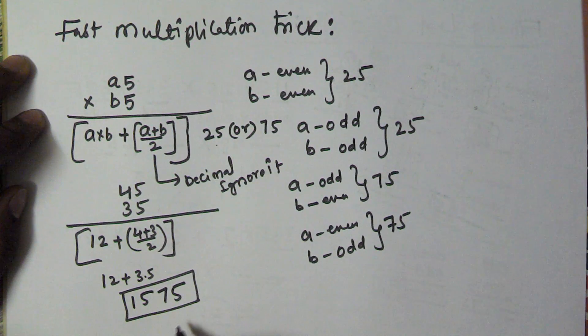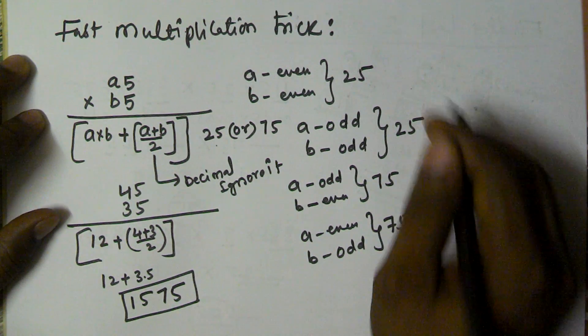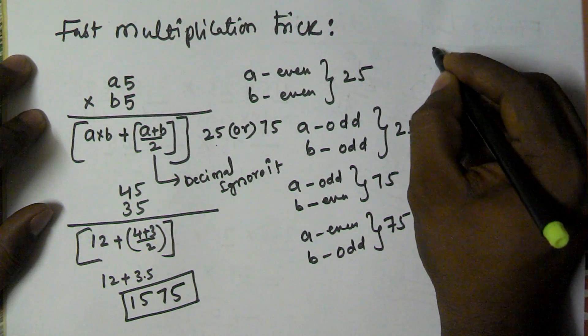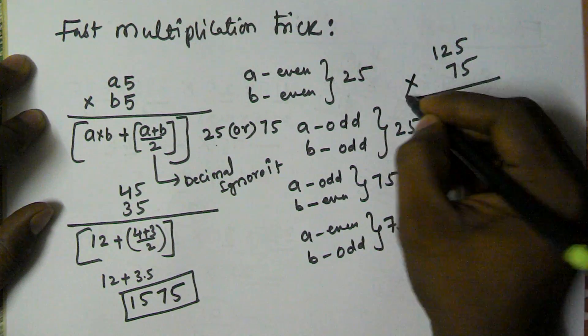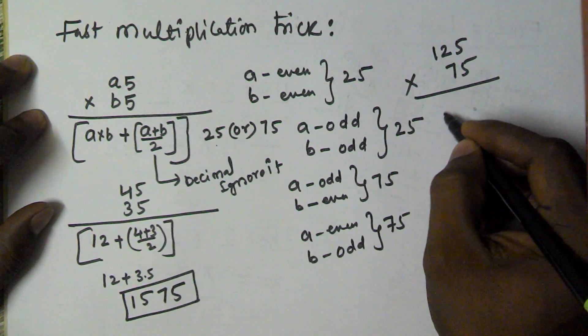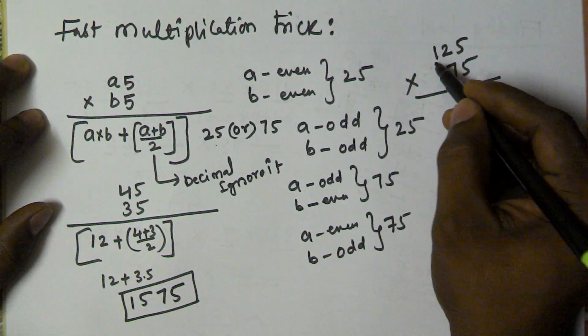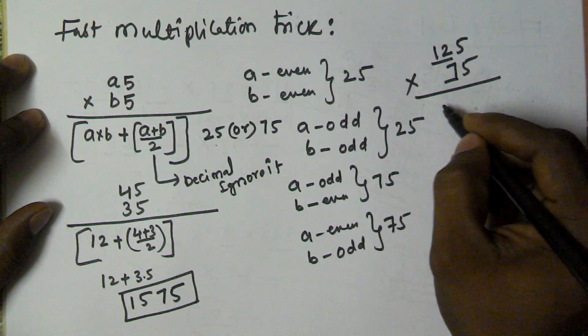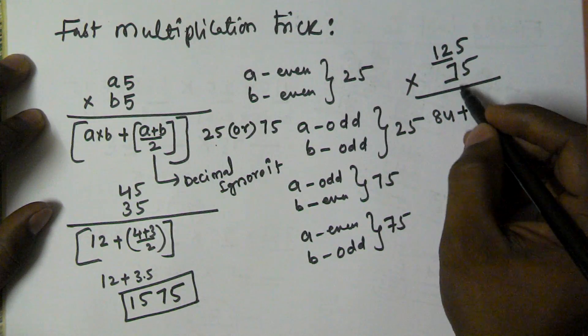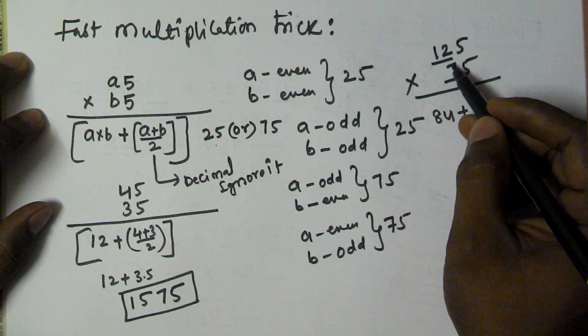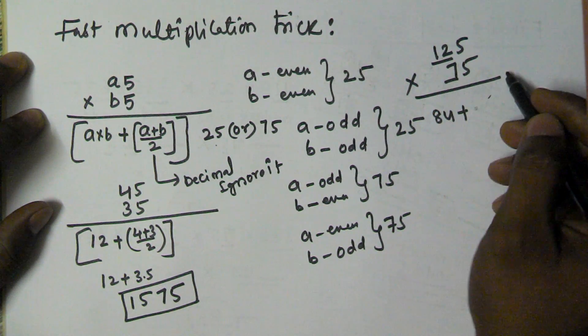Let's see another example, like 125 into 75. Here a into b, a is 12 and b is 7, so 12 into 7 is 84, plus a plus b by 2, 12 plus 7, 19 by 2.